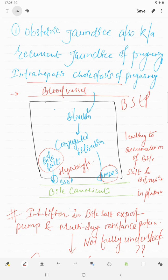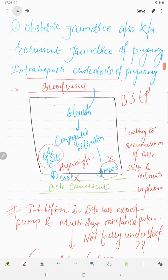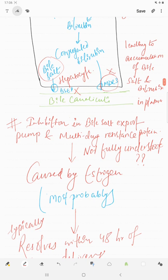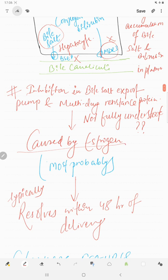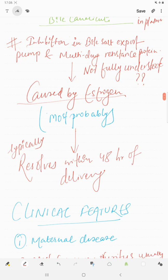Why does that happen? It happens because BSEP and MDR3 are inhibited. The reason is not fully understood, but it has been proposed that it is mostly due to estrogen, which is high in late pregnancy. This jaundice typically resolves within 48 hours of delivery.